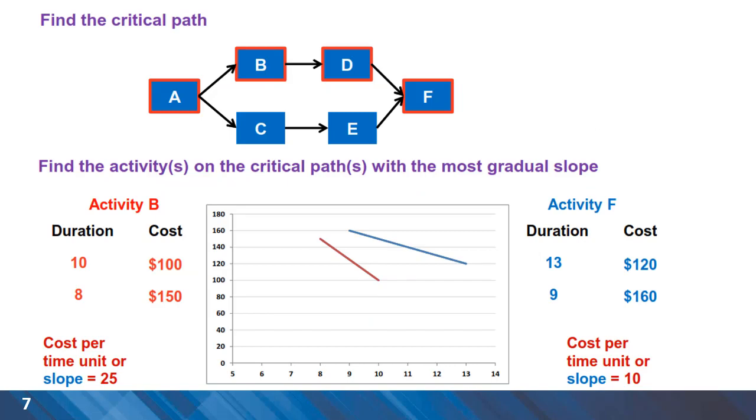Very simple example project with six activities, two of them can be crashed, activity B and activity F. We calculate the slope for the two and the better option here to crash is obviously activity F.